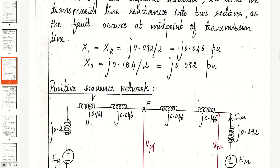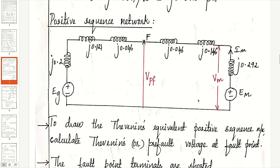Now draw the positive sequence network: EMF of the generator, X1 of generator, X1 of transformer 1, X1/2 of transmission line (first half), X1/2 of transmission line (second half), X1 of transformer 2, X1 of motor, and Em of the motor. Here X1 represents the positive sequence reactances.